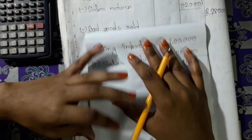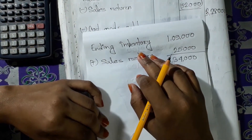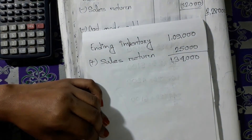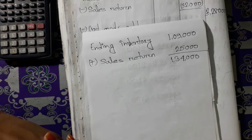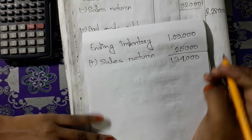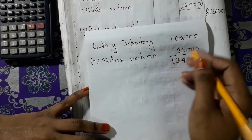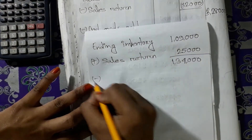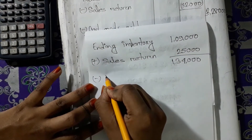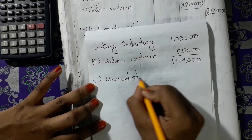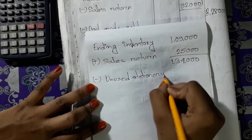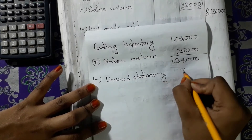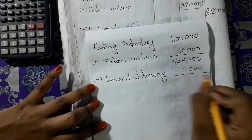From the additional information, closing stock — that is, ending inventory — minus unused stationery. So the ending inventory is adjusted by subtracting the unused stationery.